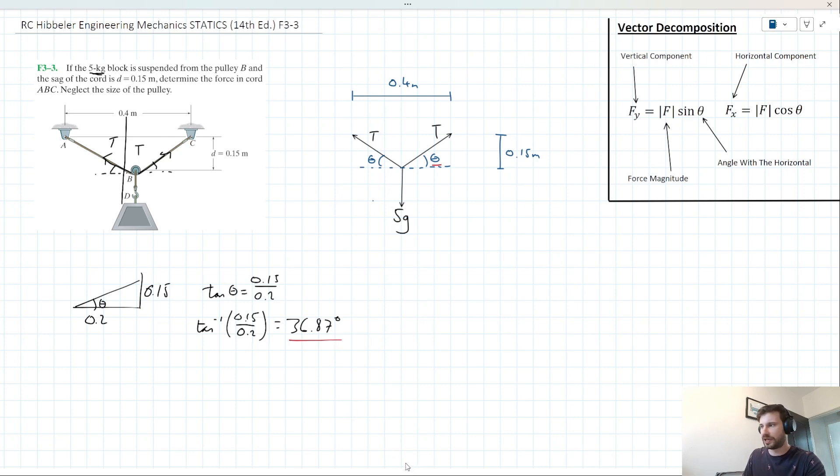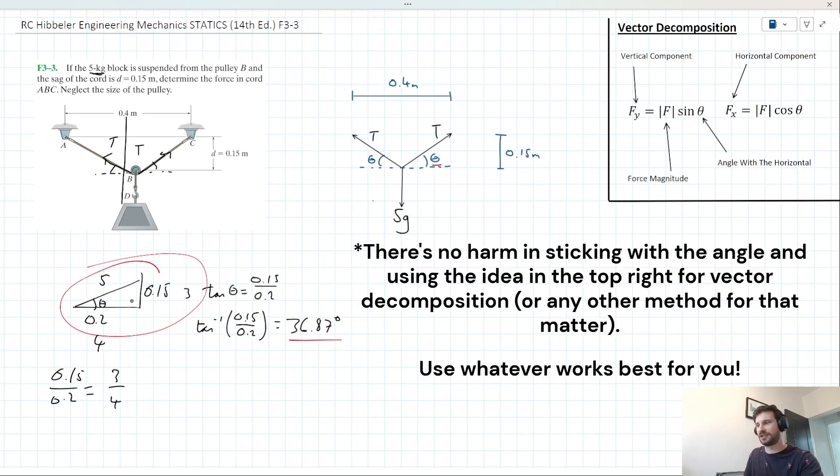Some of you might be familiar with 36.87 degrees because this triangle is actually a 3-4-5 triangle in disguise. If I take 0.15 over 0.2, I could simplify to 3 quarters. Proportionally, this side is 4, this side is 3. 3-4-5 is a Pythagorean triple, so this side is 5. We have a 3-4-5 triangle. To simplify things, I'm going to use this 3-4-5 triangle idea.